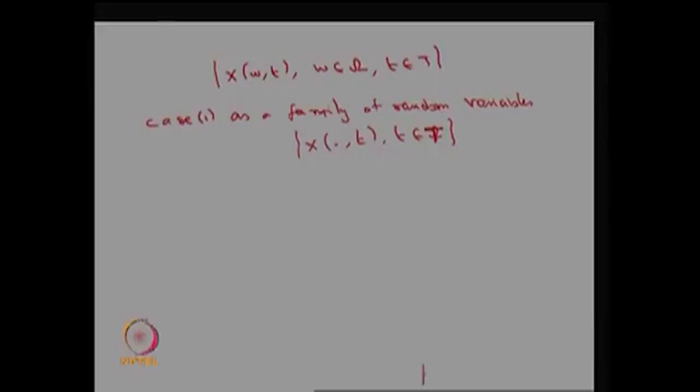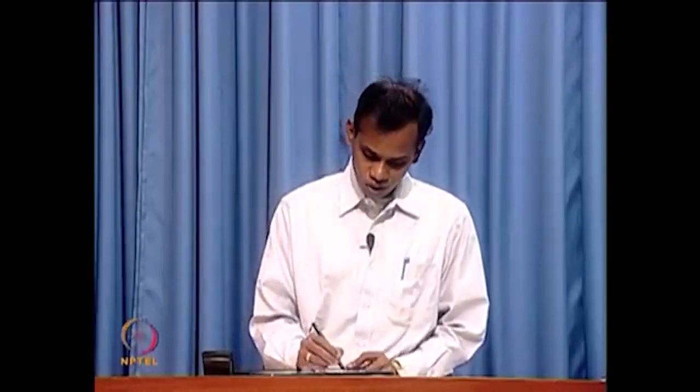This is the easier approach. For a fixed t, it is going to be one random variable, and I have collected a family of random variables for different values of small t. Therefore, this is the way we can create the stochastic process, and this is the easier approach.